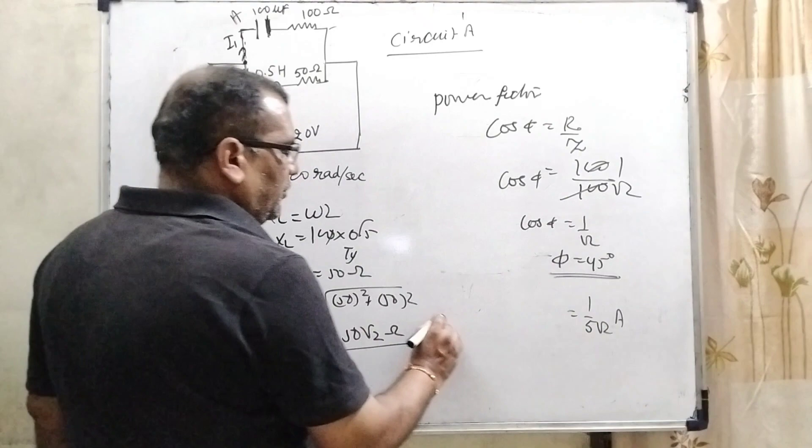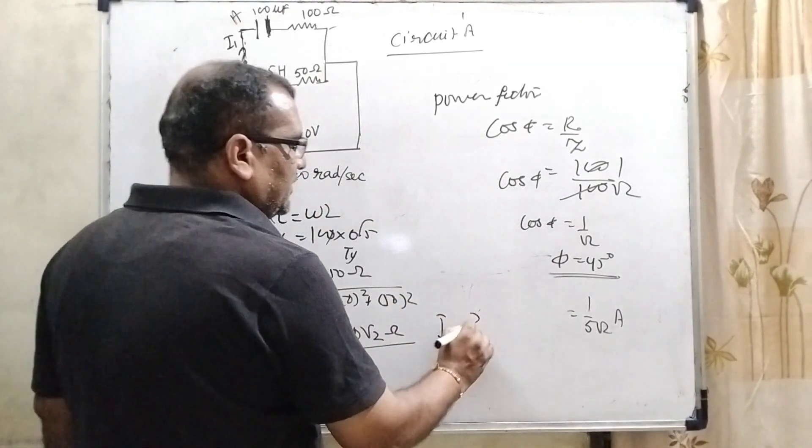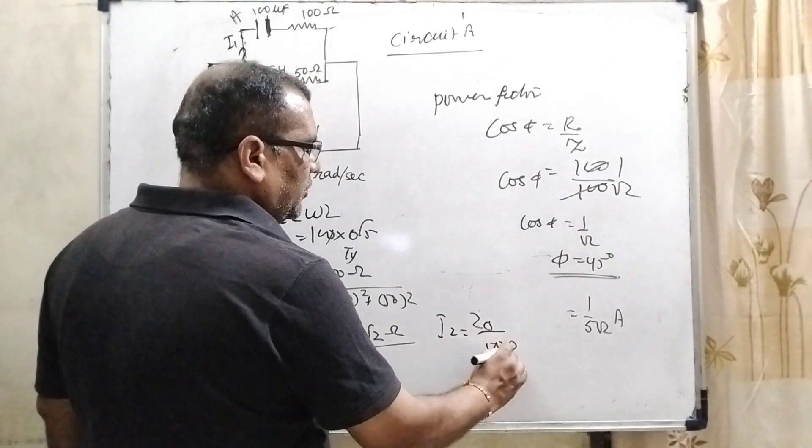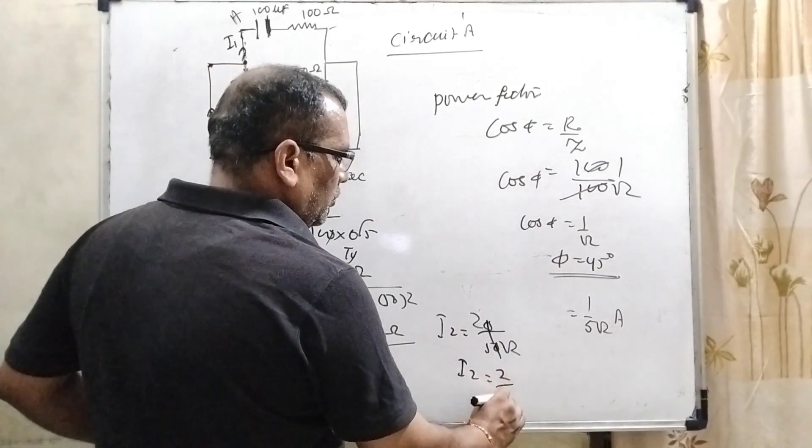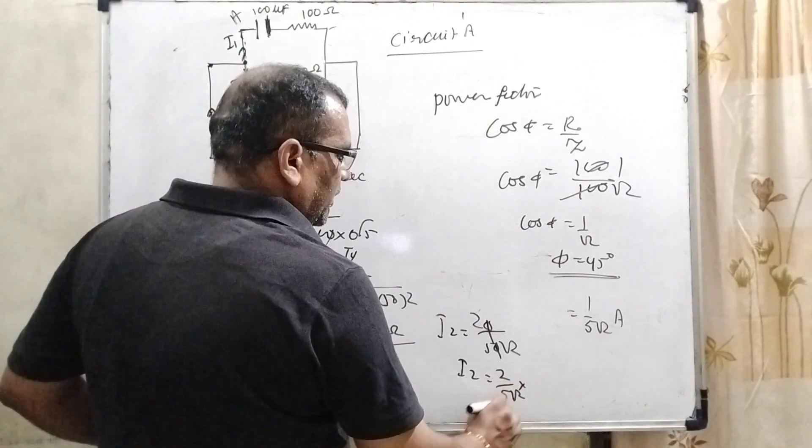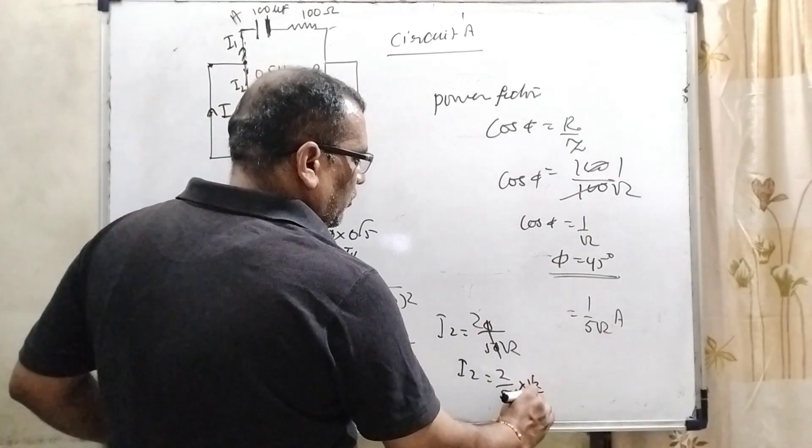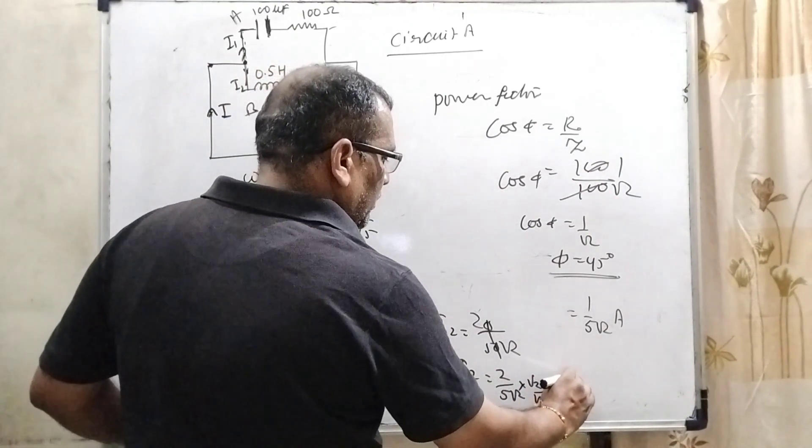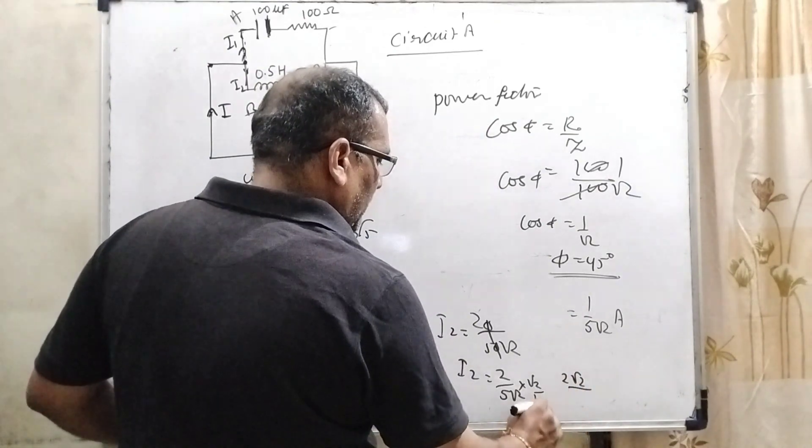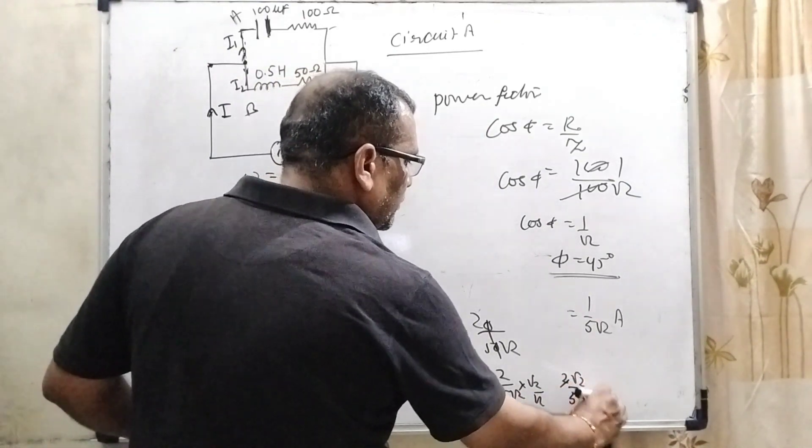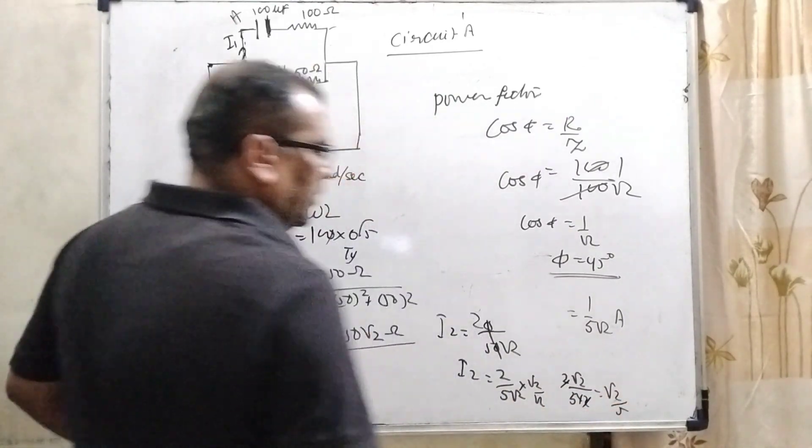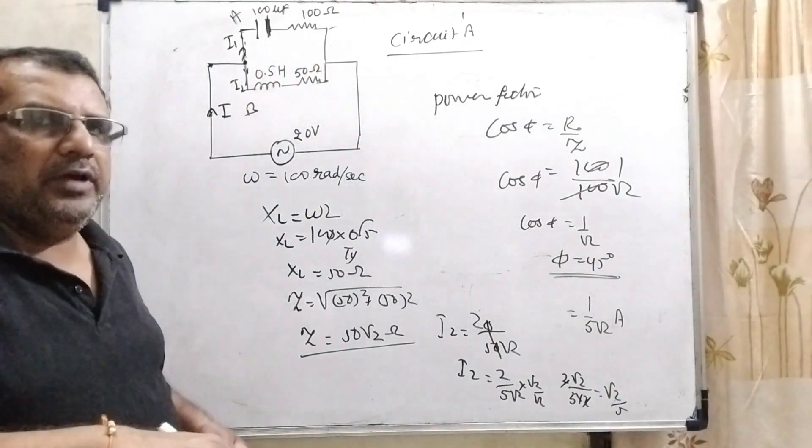So here I2 equal to again potential is same, 20 upon 50 root 2. So here zeros cancel out. Then I2 equal to 2 by 5 root 2. Rationalizing the terms, we will get 2 root 2 divided by 5 times 2, that is root 2 by 5. So here we get I2.